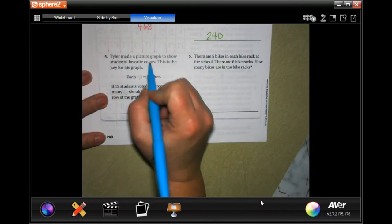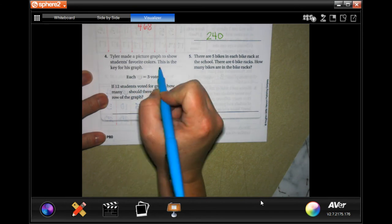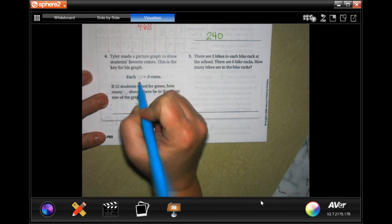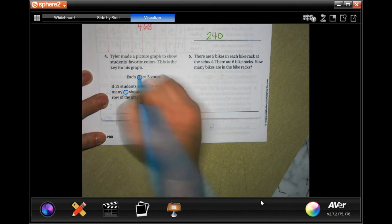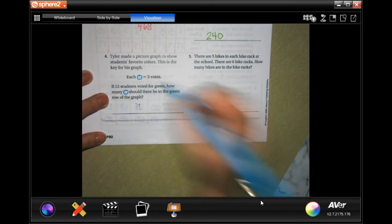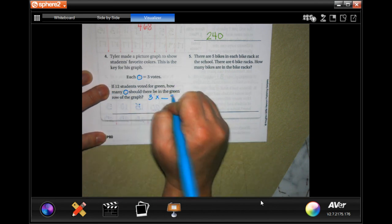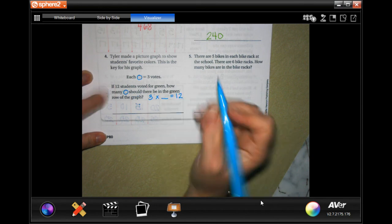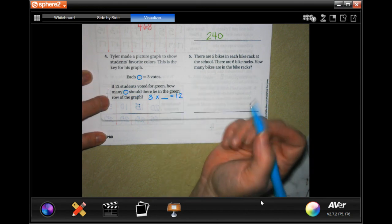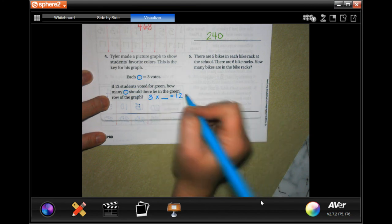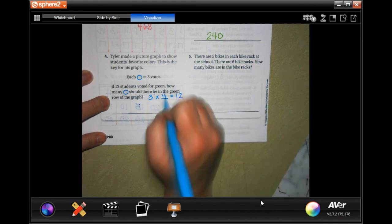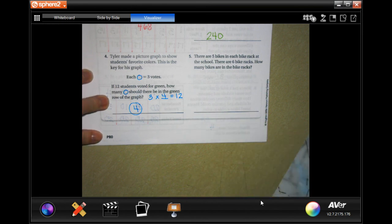Tyler made a picture graph to show students' favorite colors. This is the key for the graph. Each one of the circles equals three votes. If 12 students, they want to know three times how many equals 12. How many should be in the green row of the graph? Three times what is 12? Well, three times four is 12, so four.